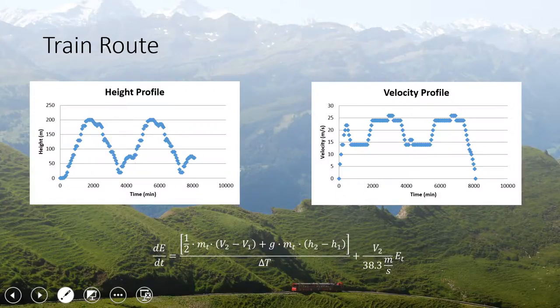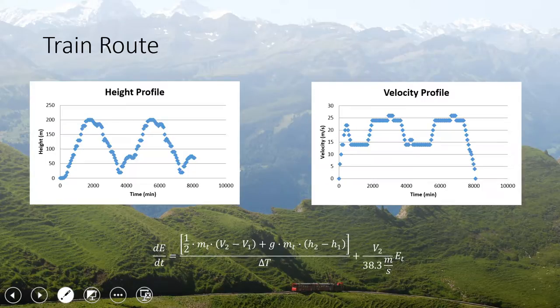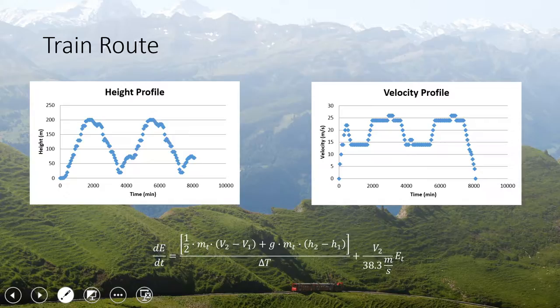In order to develop a model that we could optimize our system with, we started with an energy balance. The energy balance is mostly dependent upon the velocity of the train as well as the height which the train is going up. And so the first thing we did was develop a height and a velocity profile.